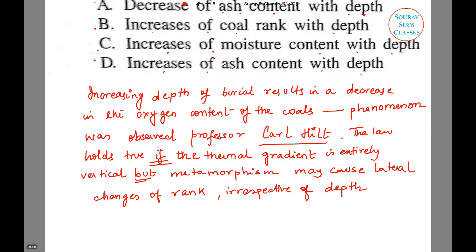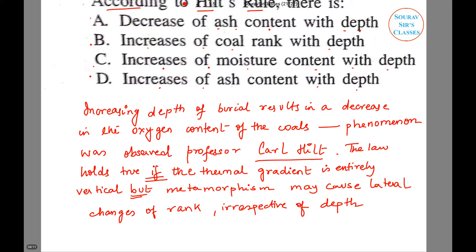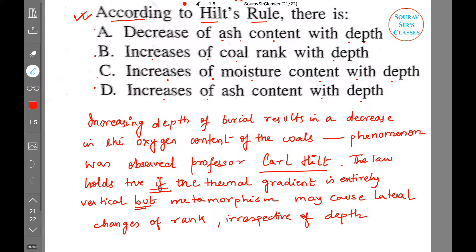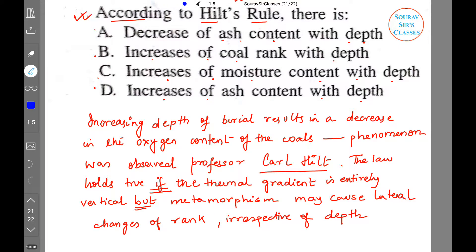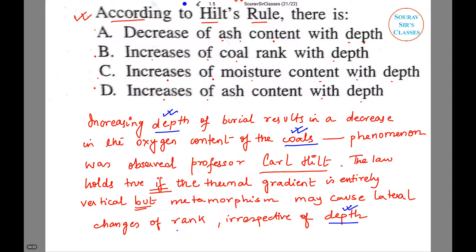I have been providing you clues from the very beginning of the tutorial. The clues are: first word is coal, second word is depth, and third word is rank. All three terms — depth, coal, and rank — belong to option B. So according to Hilt's Rule, there is an increase of coal rank with depth, and this is the correct answer.